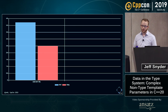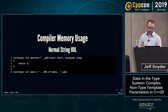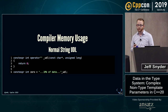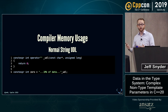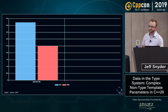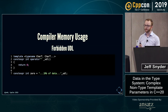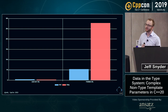Let's look at whether those concerns were justified. I'm going to look at peak compiler memory usage when compiling code snippets involving fairly big strings — about a megabyte long of random data. With a normal UDL taking a const char star, GCC uses about four bytes of memory per character and Clang uses about two and a half. But if we switch to the forbidden UDL, GCC uses 50 bytes per character and Clang uses about 278 bytes per character.